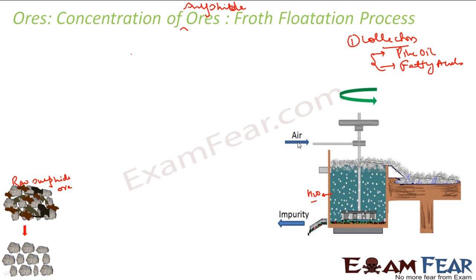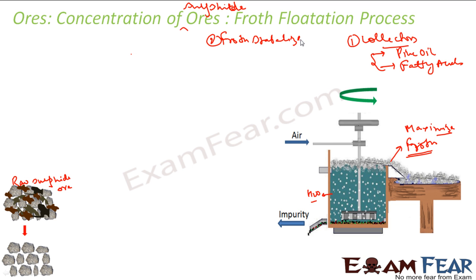We use collectors so the sulfide particles don't get too wet when placed in water. Also, since this is a froth process, we want to maximize the froth. We do that by using froth stabilizers. Froth stabilizers ensure we get more and more froth. Examples of froth stabilizers are cresols and aniline.